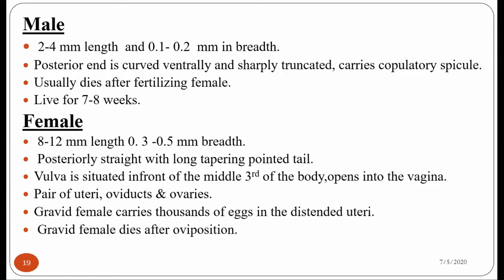The gravid female worm, after laying eggs, dies — or it may regain access to the human body and die inside its natural habitat, the large intestine. The male worm dies after fertilizing the female, while the adult female worm dies after laying eggs.